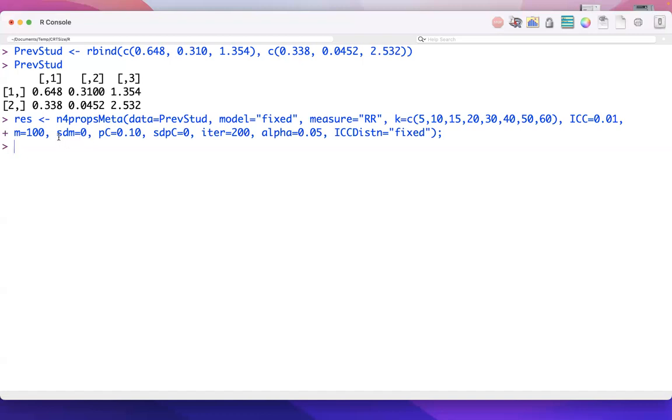So, we have a parameter SDM, which corresponds to the standard deviation of the cluster sizes, which in practice will allow varying cluster sizes. PC is the control rate, so in this case would be the rate of morbidity in the control group. And we can once again include an estimate of variability for that parameter as well.